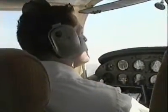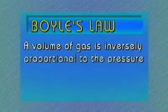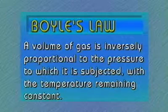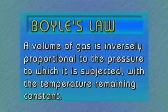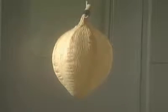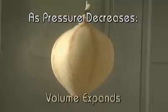Boyle's law states that a volume of gas is inversely proportional to the pressure to which it is subjected, with the temperature remaining constant. You can see this law in action by observing a balloon taken to altitude in an altitude chamber. As the pressure decreases around the balloon, the volume within the balloon will expand. As the chamber descends, the pressure increases around the balloon.